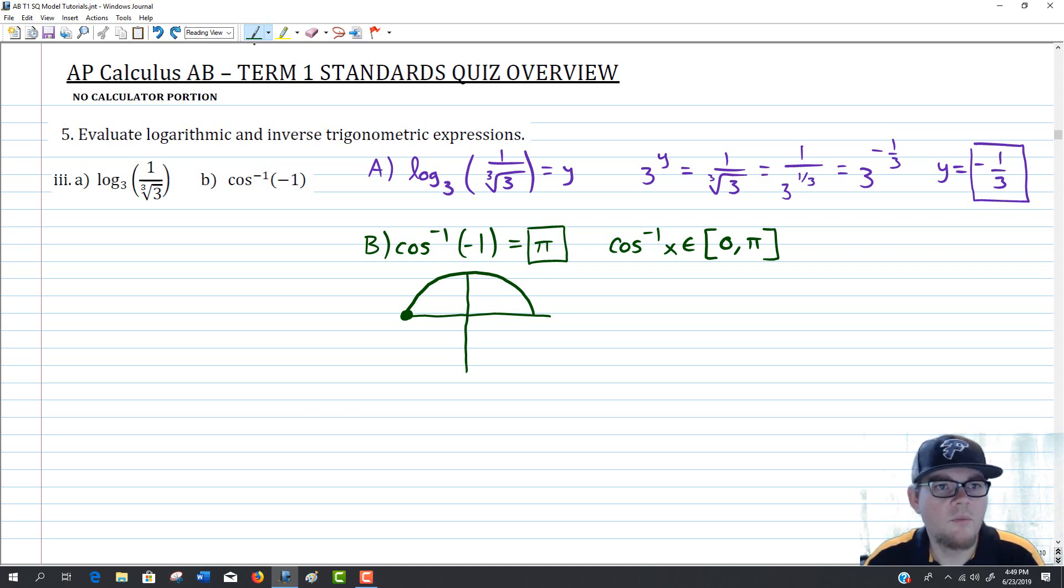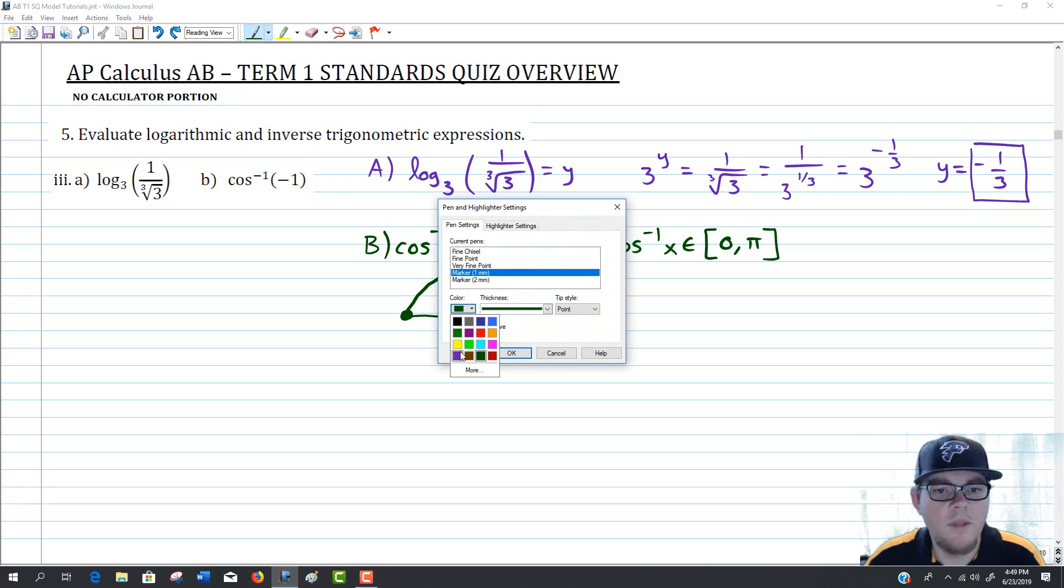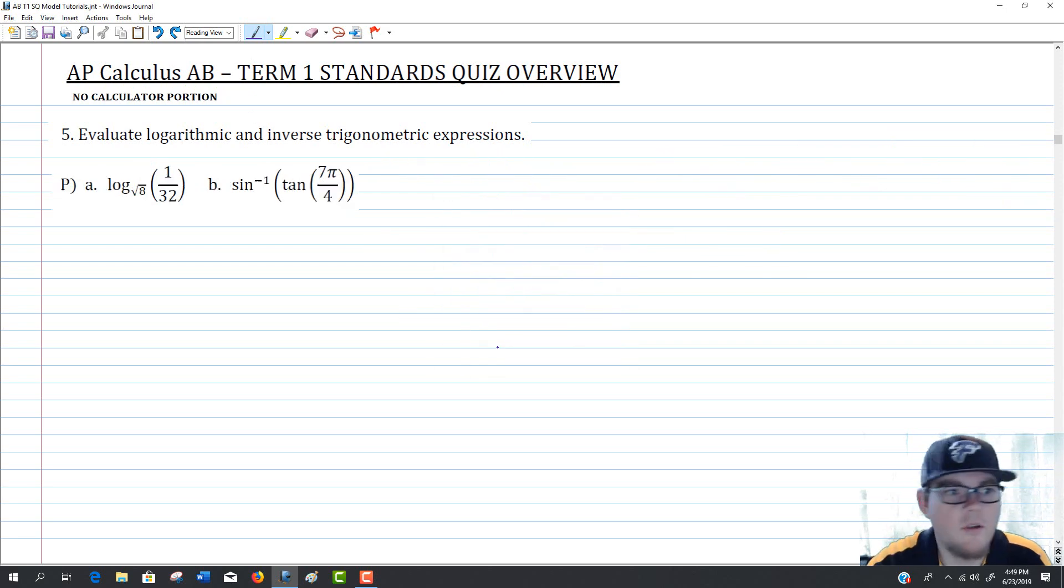From there, that leaves us with one more question to attack. That would be the plus question, if memory serves. So the plus question asks you to do the same thing. You're still going to evaluate a log expression and an inverse trig expression. They're just going to be slightly more involved, asking you to do something a little extra. No guarantee every single one will look like this, but they're pretty representative still.